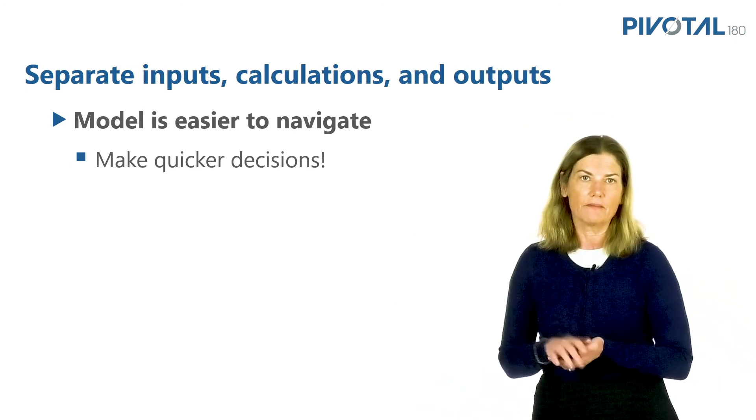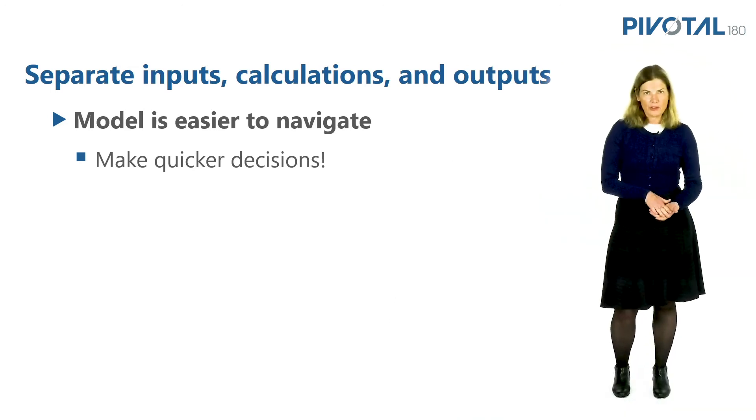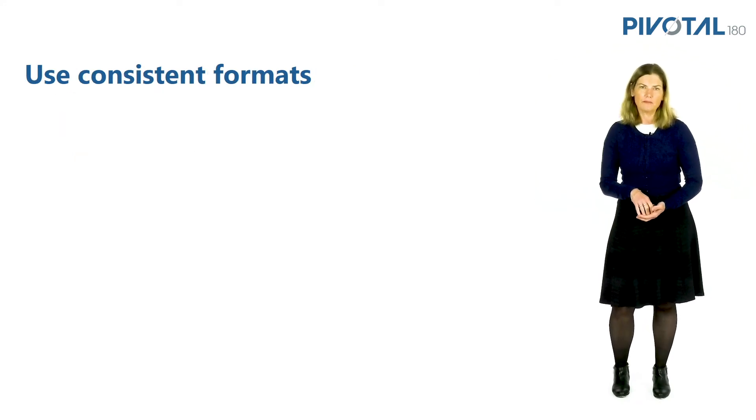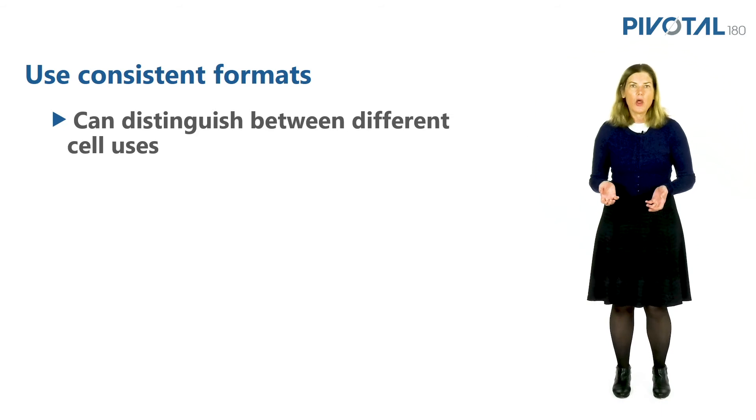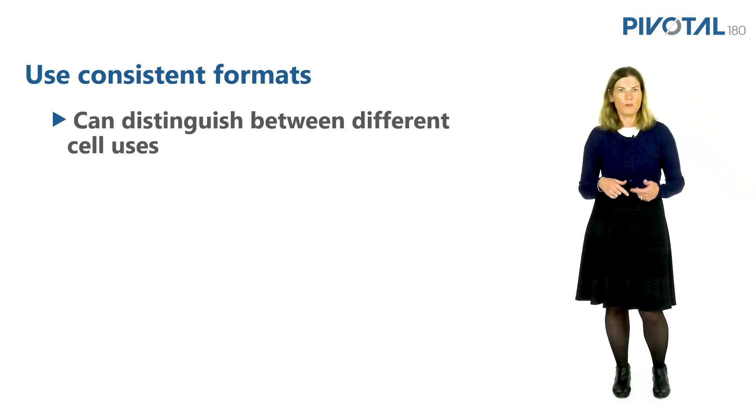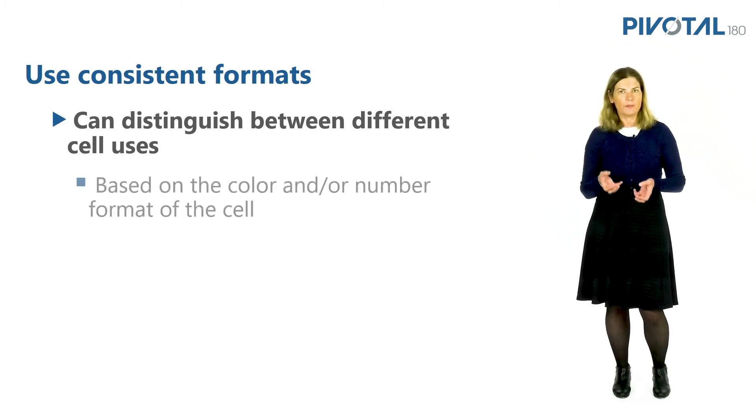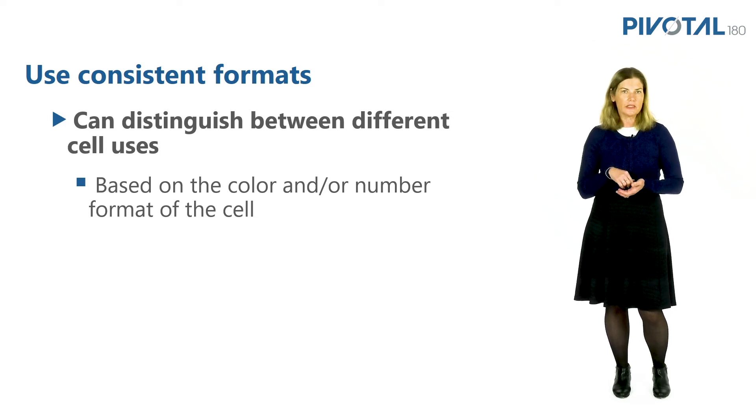Another rule of a financial model is it needs consistent use of cell and number formats. So what does this mean? All the inputs, calculations, and outputs of the model are clearly identifiable. We can use specific backgrounds and font colors for each type.